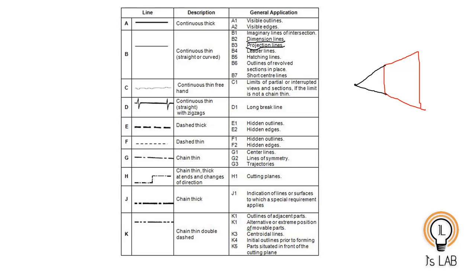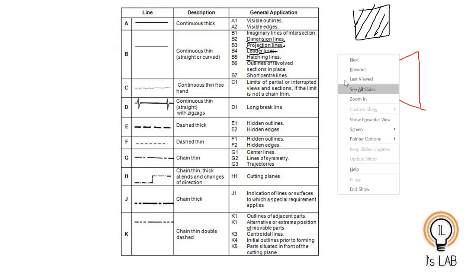Continuous thin line is also used for dimension lines, projection lines, and leader lines — all these belong to dimension lines, which we will discuss when we reach the dimensioning part. Hatching lines — if you want to hatch an area you hatch like this — as well as outlines of revolved sections in plane and short central lines, are all represented using continuous thin line.